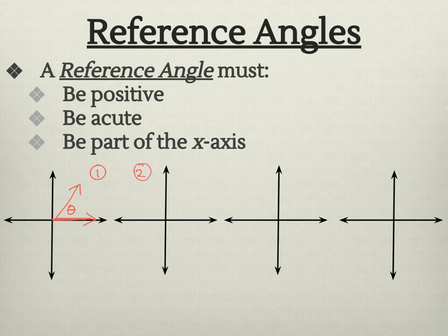If I'm over in quadrant two, I still keep my first ray, my initial side, and then I'm going to open up. So I'm coming over and just quadrant two, but that's not my reference angle because that's obtuse. This one over here is my reference angle. It's positive, it's acute, and it does have a ray as part of the x-axis.